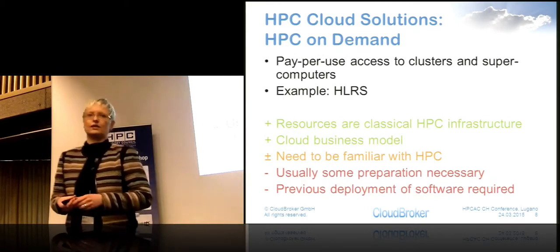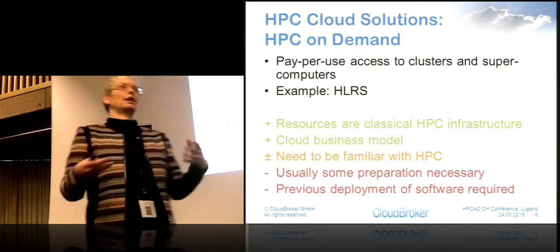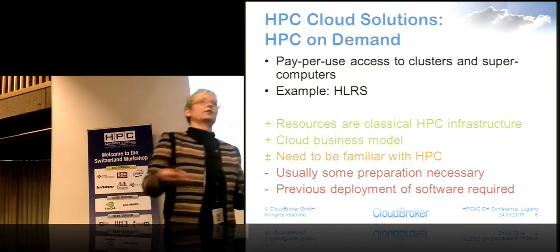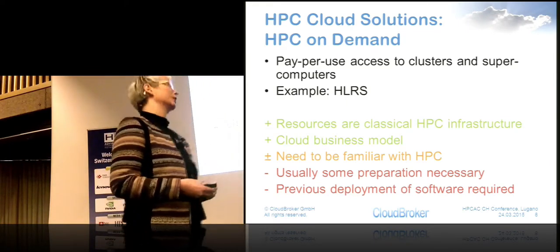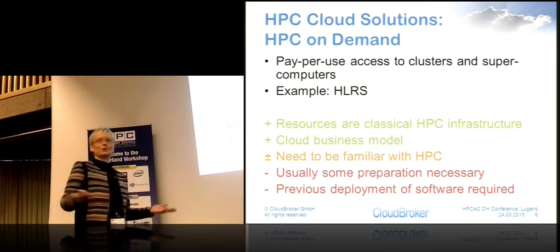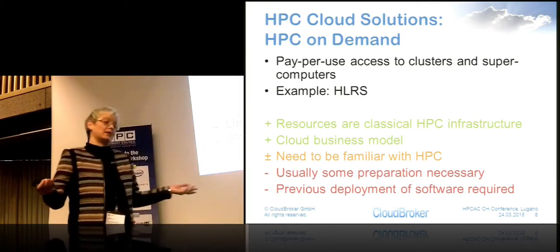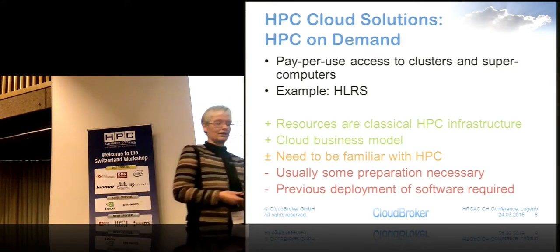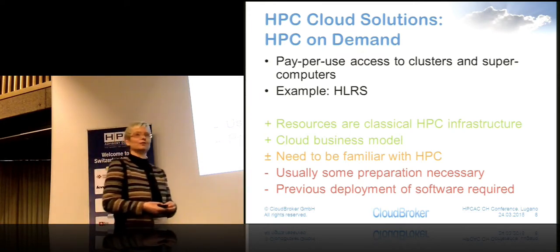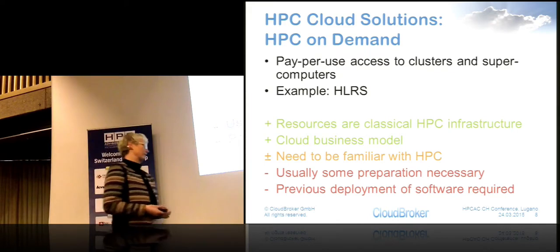On the other side, we have what I call HPC on demand — a classical HPC supercomputer center, commercial or government, where you provide access to the outside and pay per computing hour. You get the advantage of classical HPC infrastructure for all the purposes we've discussed, now combined with the cloud business model, without necessarily requiring virtualization. For users familiar with HPC, this is great — they can continue as before. But for users not familiar with that model, there's still a learning curve, and you need the software to be available.